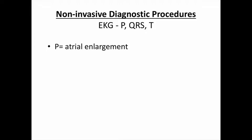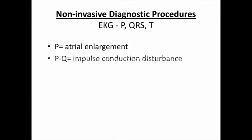Traditionally the EKG consists of the P wave, followed by the QRS complex, and then the T wave. The P wave corresponds to what's going on electrically in the atria. If you have a heightened P wave, that traditionally would indicate that you have an enlarged atria.